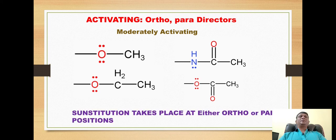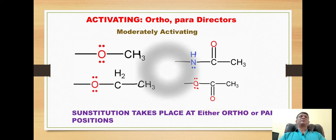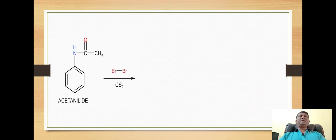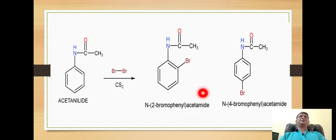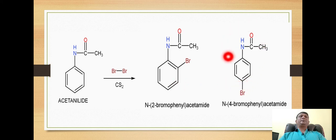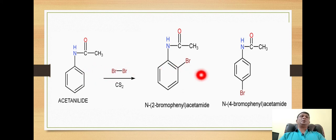In the presence of such groups, substitution takes place at either the ortho or para position. For example, when acetanilide is halogenated with bromine in the presence of carbon disulfide, the products obtained are 2-bromoacetanilide and 4-bromoacetanilide, with the 4-bromo product being the major product. The electrophile bromonium ion is directed at either the ortho or para position.